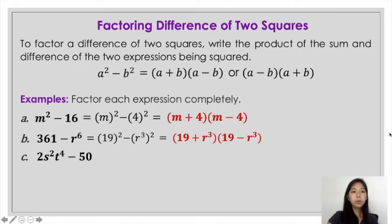Alright, to continue, we have the third given, which is 2s squared t raised to 4 minus 50. Now looking into the given itself, it consists of two terms, so yes, that's a binomial.